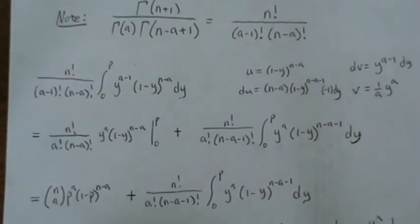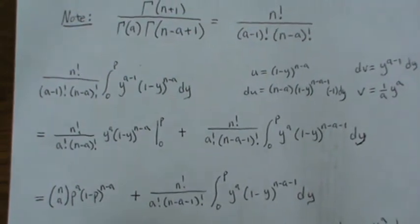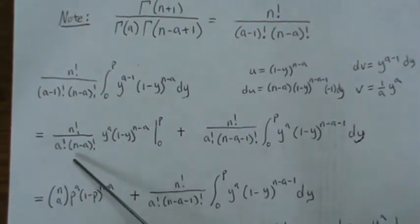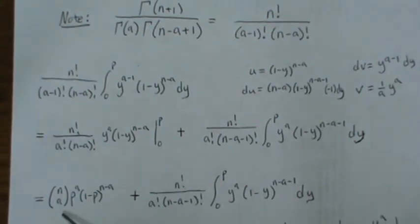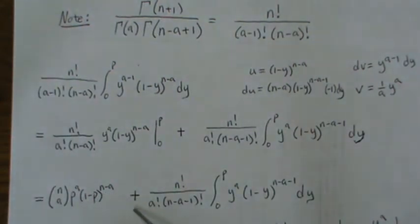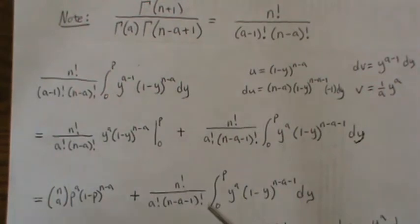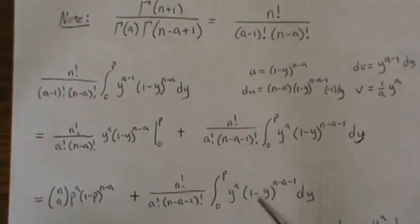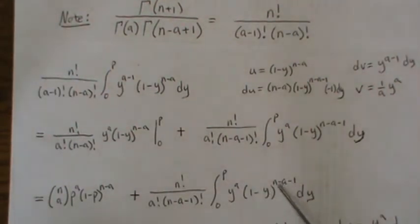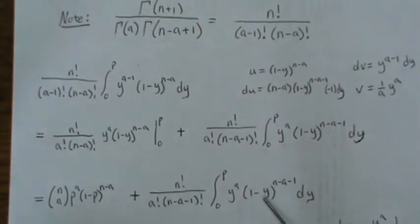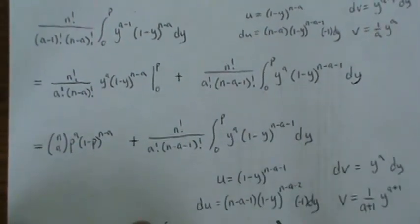We rewrite this: the first piece is N choose A times P to the A times one minus P to the N minus A. This second piece is the remaining integral. We have just reduced this component by one, so let's do integration by parts again.